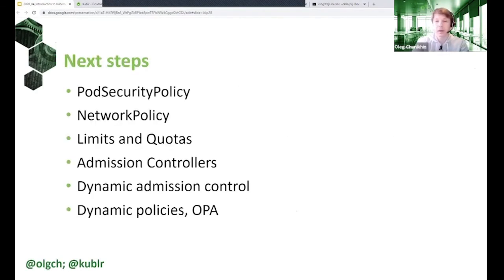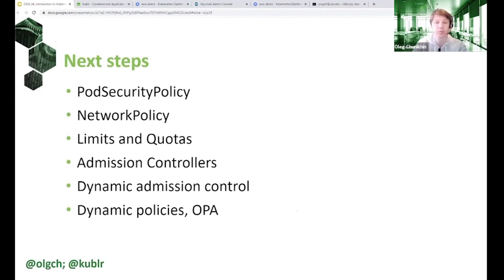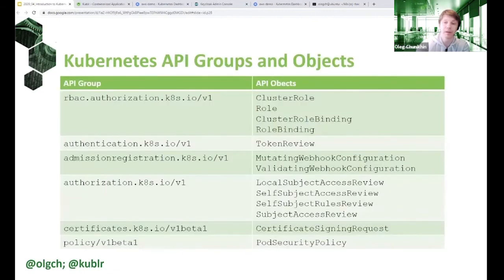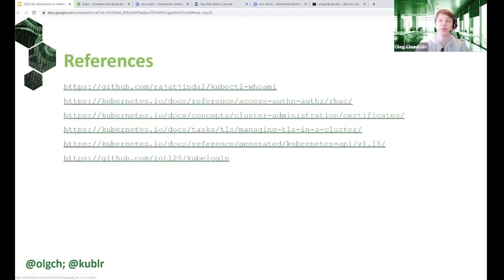This presentation covers the basics of Kubernetes RBAC and authentication and authorization mechanisms. Beyond what we covered, there are relevant security topics to learn: pod security policies, network policies, and things like dynamic policies using OPA (Open Policy Agent) to dynamically define authorization and authentication decisions in the cluster. I've included a number of links providing references to what can be learned beyond basic Kubernetes security capabilities.